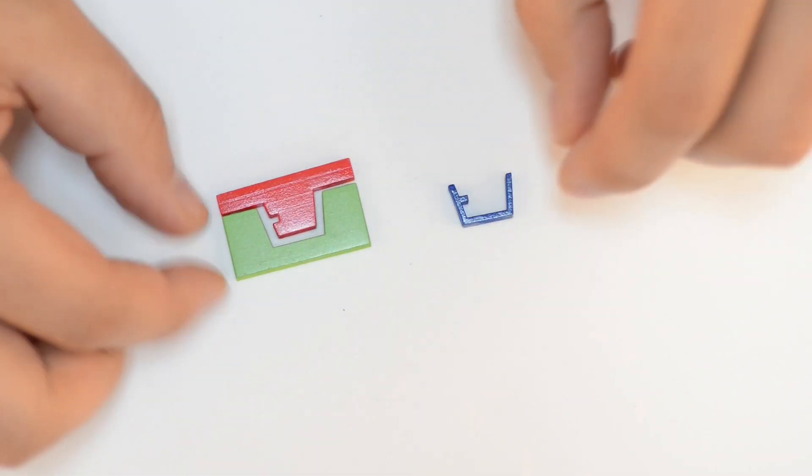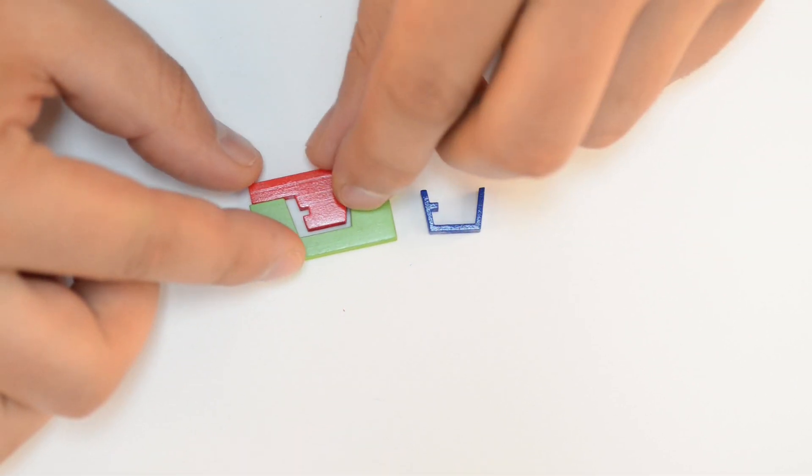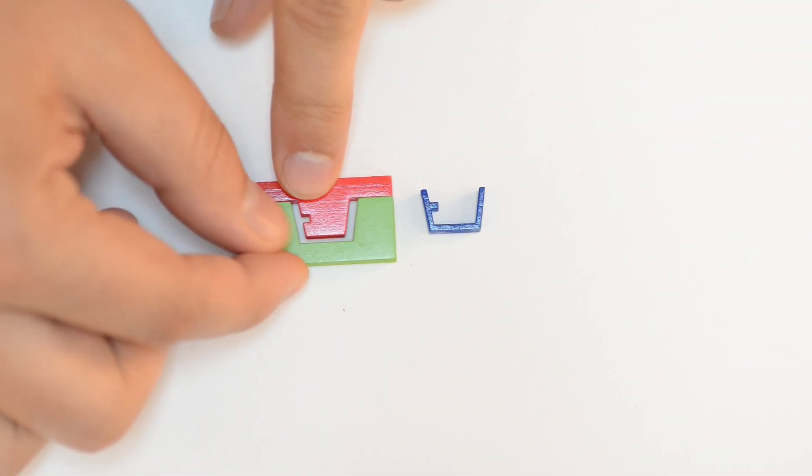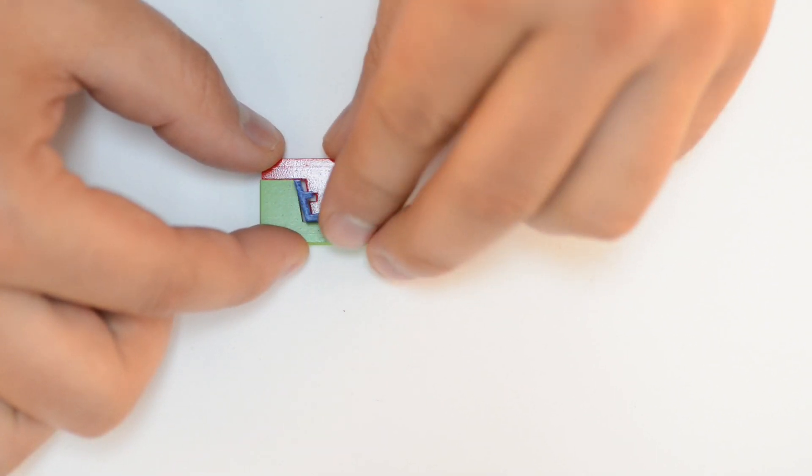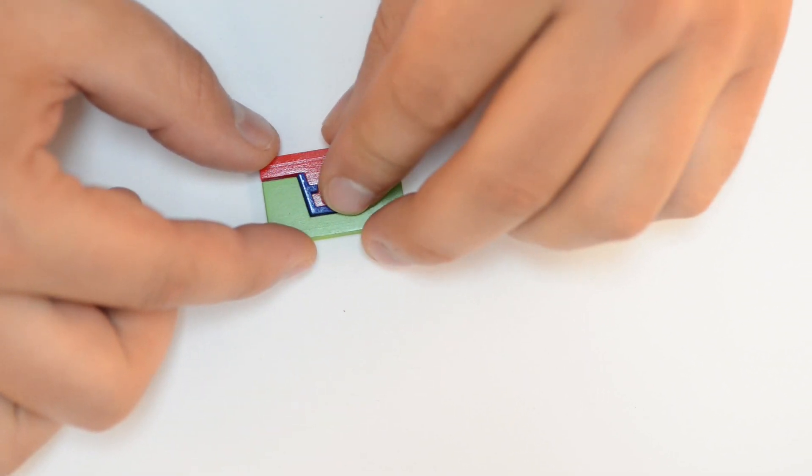Now when you have a part such as this with an undercut, you can see the notch that needs to be made in the mold. When the plastic is injected, it fills the cavity just fine.